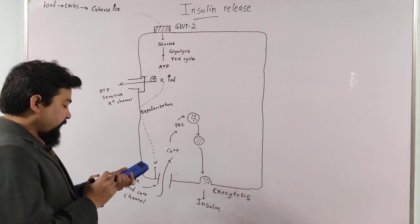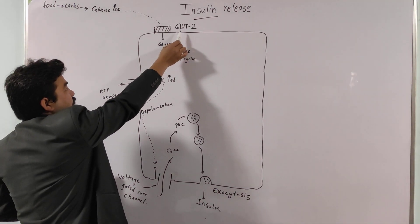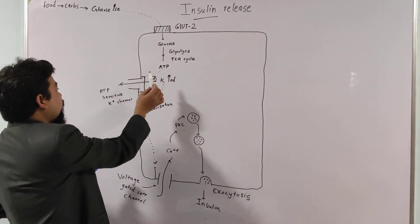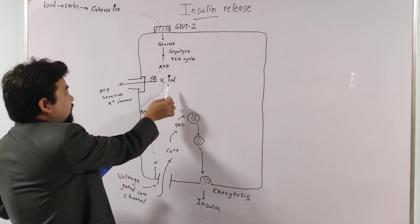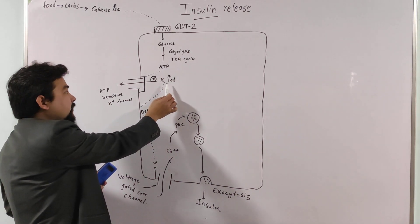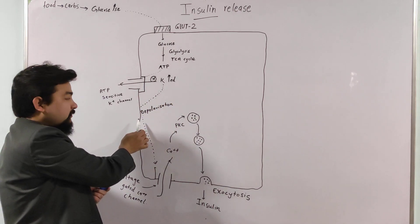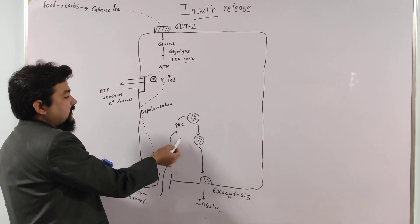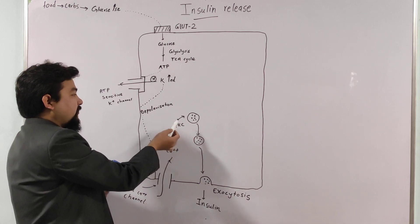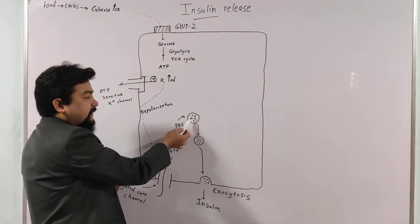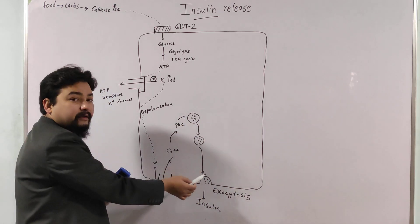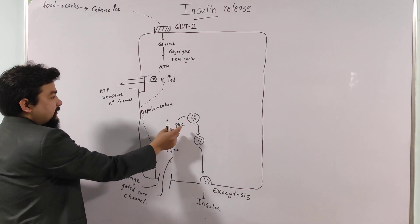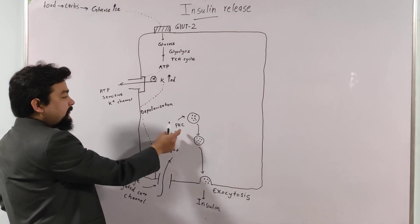So in summary: glucose enters the beta cell through GLUT2; it undergoes glycolysis and the TCA cycle to generate ATP; ATP closes the ATP-sensitive potassium channel; potassium concentration increases inside the beta cell, causing depolarization; depolarization activates the voltage-gated calcium channel; calcium influx activates protein kinase C; and protein kinase C acts on secretory granules to release insulin by exocytosis.